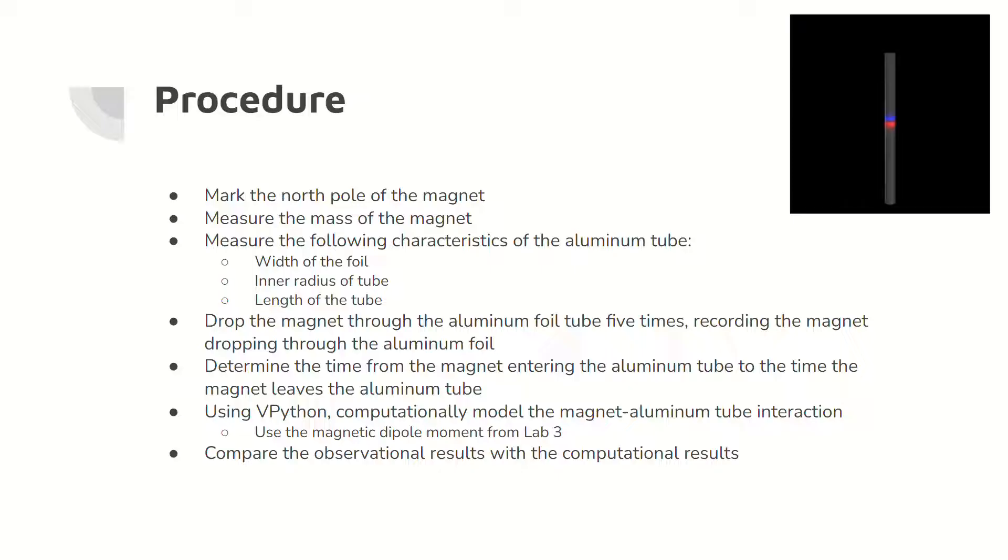Here the procedure for this lab is shown. Critically, five trials were conducted on the observational section of the experiment so that an average time could be obtained. In addition, the magnetic dipole moment from lab 3 is used for the computational model.